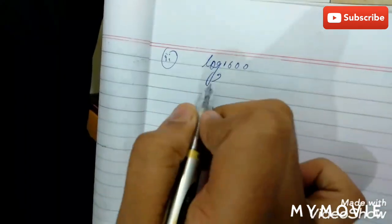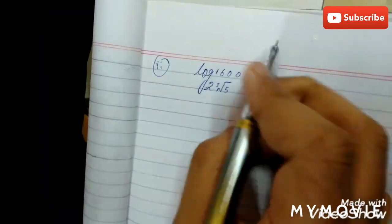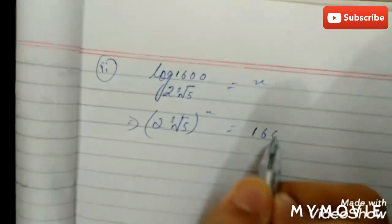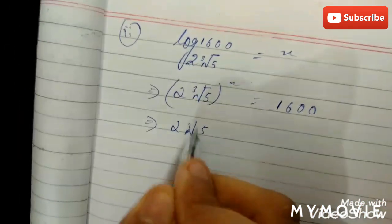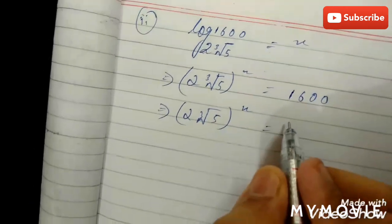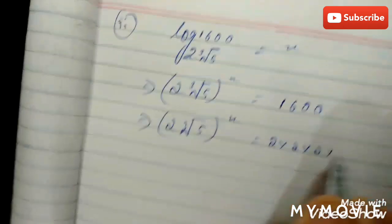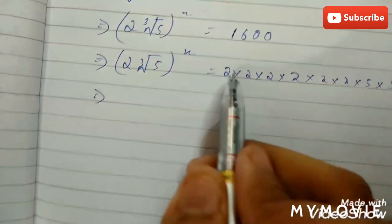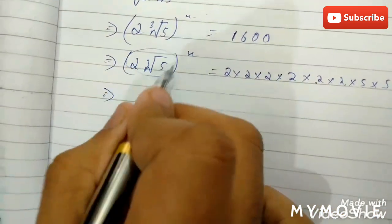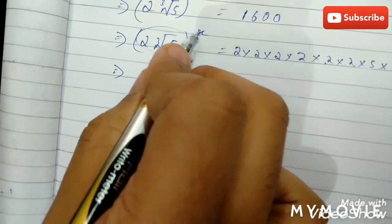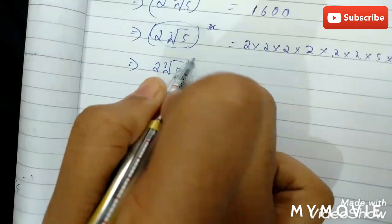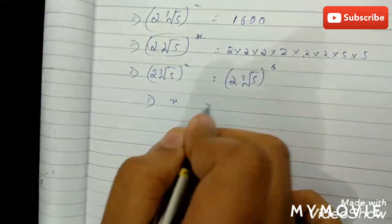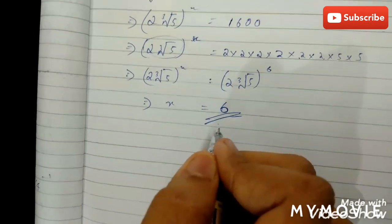Log 1600 to the base cube root of 5 times 2 equals x. It implies cube root of 5 times 2 to the power x equals 1600. Now 1600 can be written as 2 to the power 6 into 5 squared. Expressing this in terms of the base, the value of x is 6.